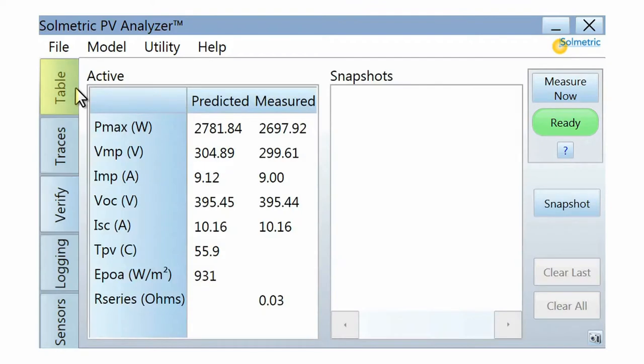The Table tab displays the measured and predicted parameters including short circuit current, open circuit voltage, and the maximum power point.